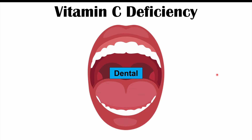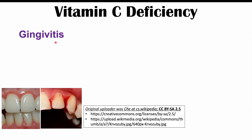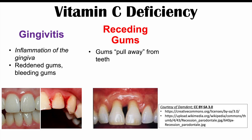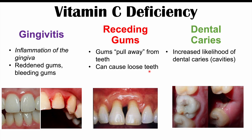The first category of signs and symptoms is dental. One important one is gingivitis — inflammation of the gingiva. You can see reddened gums, sometimes bleeding gums, and receding gums, where the gums pull away from the teeth. This can lead to loose teeth or even teeth that fall out. We can also see a higher likelihood of dental caries — dental cavities. Even a subclinical vitamin C deficiency may produce milder forms of these issues.